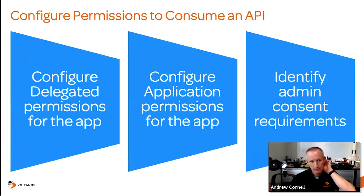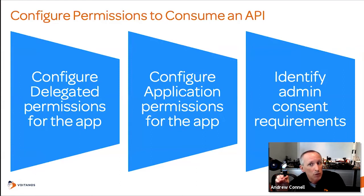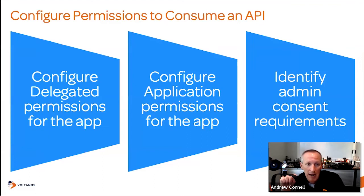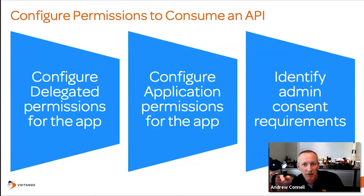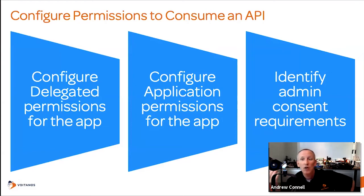You need to understand the concepts of dynamic vs. static consent and dynamic vs. static permissions. You also need to understand permissions when consuming an API — specifically how to configure delegated permissions vs. application permissions for your app, how they differ, and how to identify admin consent requirements. How do you identify when you need to go through admin consent? How do you trigger it and consent for application permissions that require administrative consent?